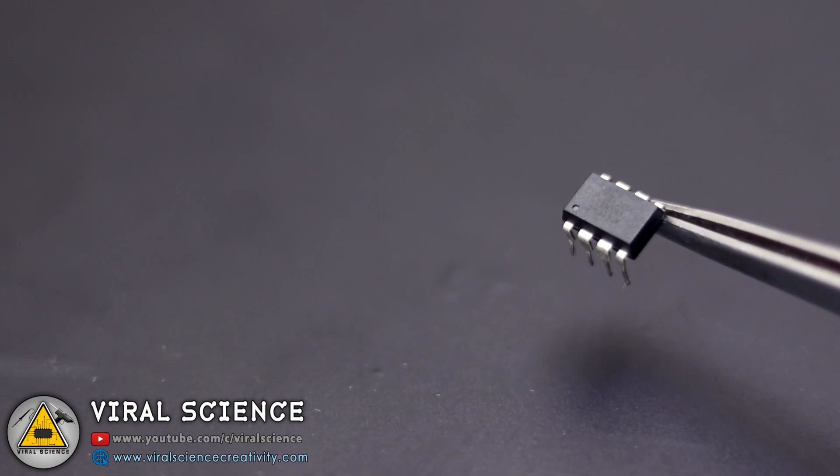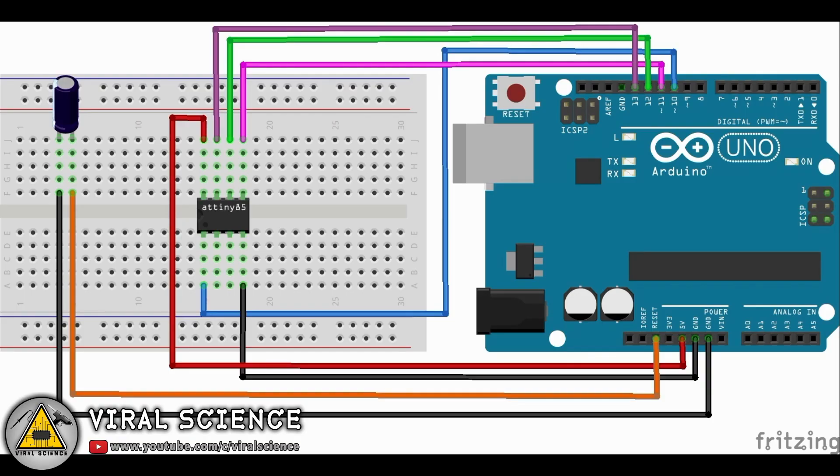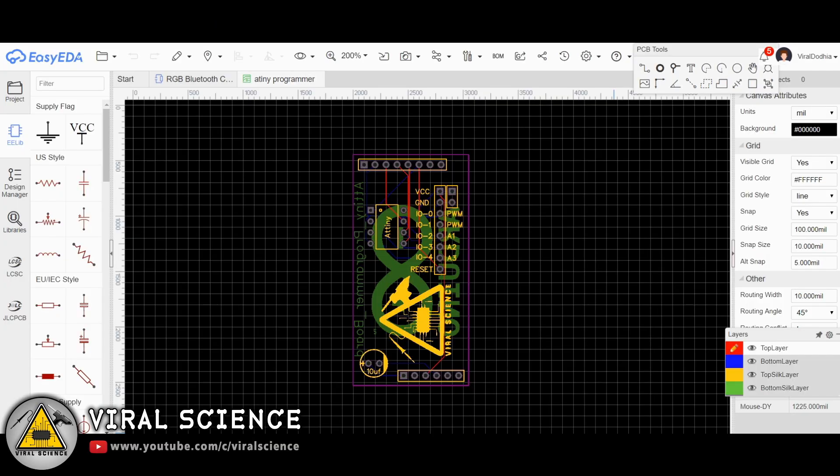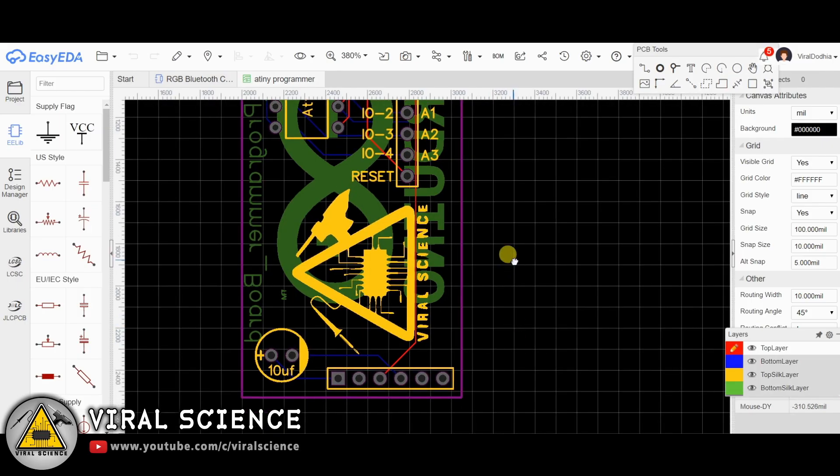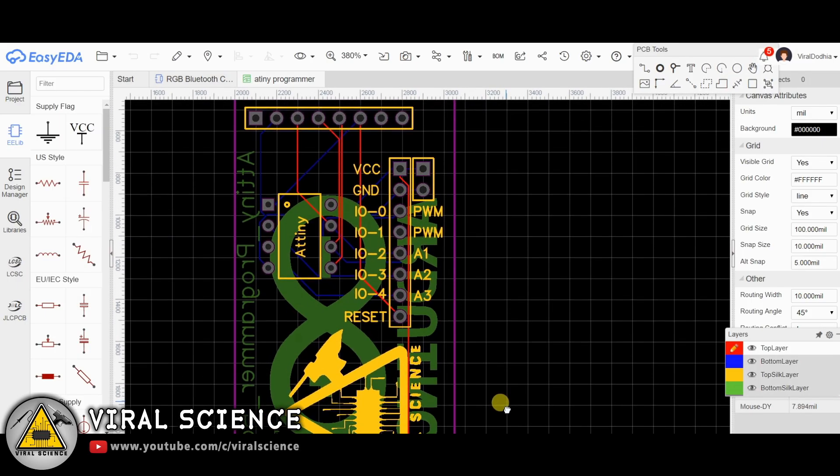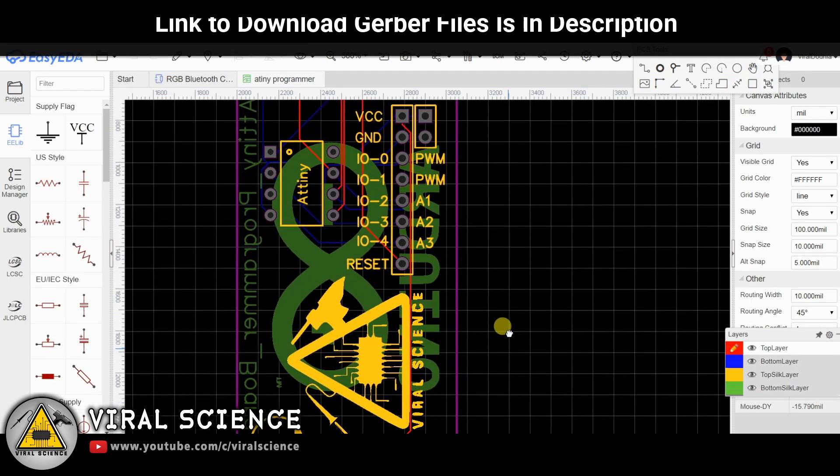To program the ATiny85 microcontroller, we need to connect it with an Arduino Uno. To simplify this process, I designed my own PCB so we can directly connect it to the Arduino Uno board. I've designed this PCB and generated the gerber file.